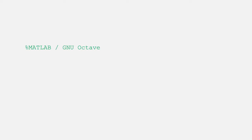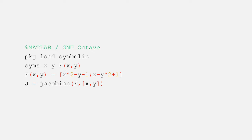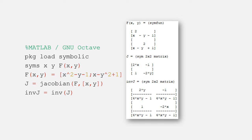If you're using MATLAB or GNU Octave, you can use symbolic programming to define variables for x and y, as well as a function F. Here I'm using the example from the rest of the video, but you can make any function F. Then have it compute the Jacobian for you by calling the Jacobian function on F. You can also have it invert J for you, giving an output that looks like this.